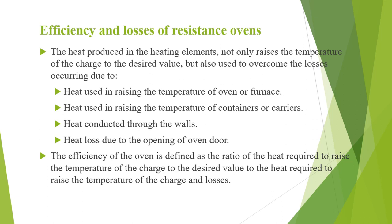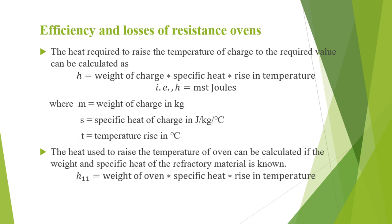The efficiency of the oven is defined as the ratio of heat required to raise the temperature of the charge to the desired value, to the heat required to raise the temperature of the charge and losses. The heat required to raise the temperature of the charge is h = m × s × t joules, where m is the weight of the charge in kg, s is the specific heat in joules per kg per degree Celsius, and t is the temperature rise in degrees Celsius. The heat used to raise the temperature of the oven, denoted H11, is given by H11 = weight of the oven × specific heat × rise in temperature.